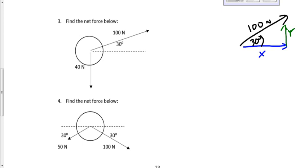X is the adjacent side. So we're going to say cosine 30 degrees equals adjacent over the hypotenuse. X equals 86.6025 newtons.